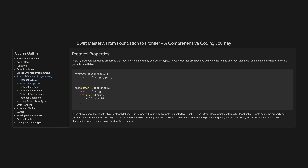Protocol properties. In Swift, protocols can define properties that must be implemented by conforming types. These properties are specified with only their name and type, along with an indication of whether they are gettable or settable. In the above code, the Identifiable protocol defines an id property that is only gettable, indicated by get. The User class, which conforms to Identifiable, implements the property as a gettable and settable stored property. This is allowed because conforming types can provide more functionality than the protocol requires, but not less. Thus, the protocol ensures that any identifiable object can be uniquely identified by its id.